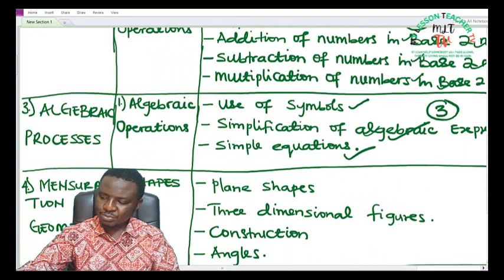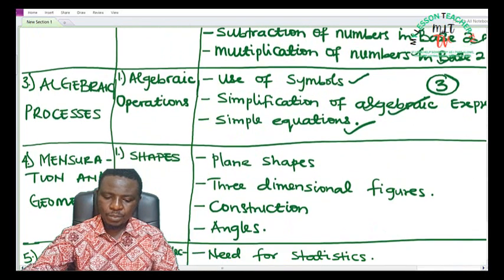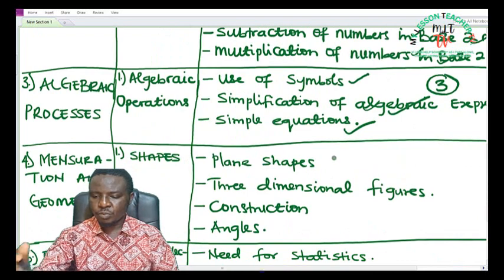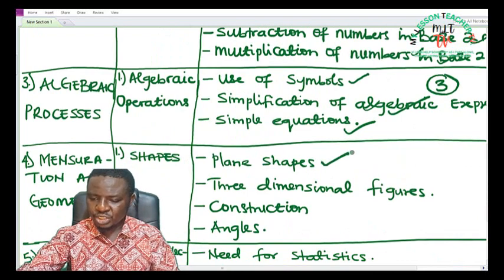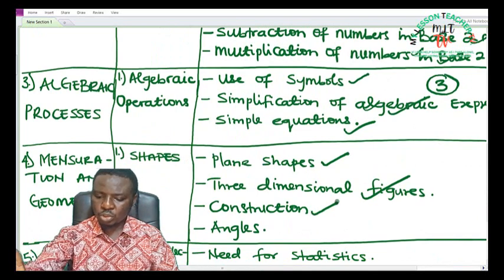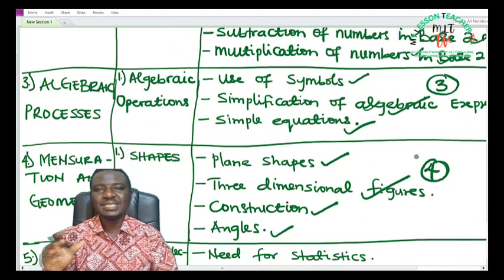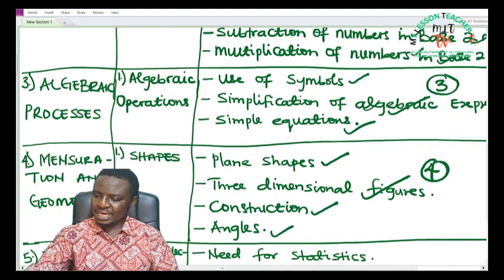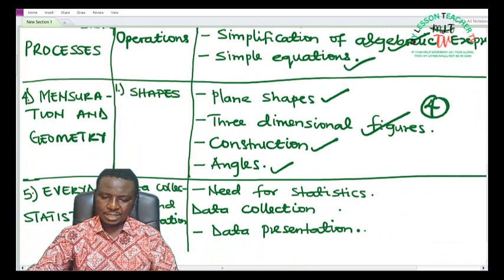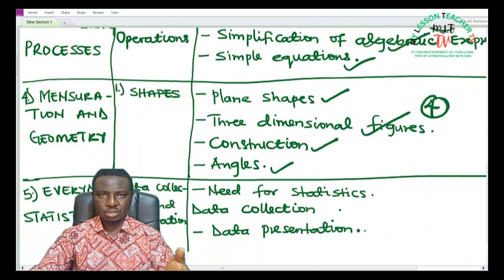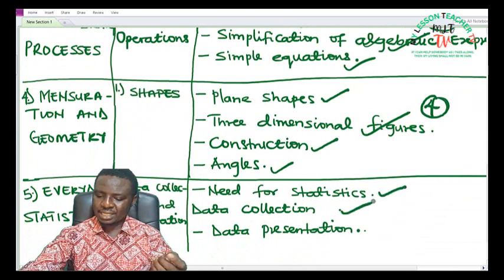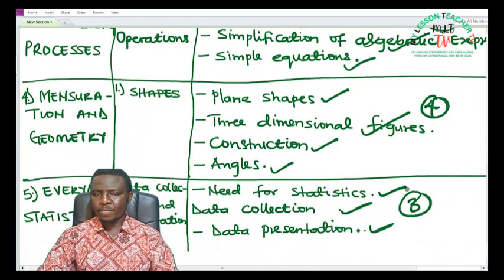Under the fourth theme, which is mensuration and geometry, we have the sub-theme shapes. You shall be looking at plane shapes, three-dimensional figures, and construction and angles — giving you four topics under this theme. Then in everyday statistics, under data collection and presentation, you will be treating topics like the need for statistics, data collection, and data representation — about three topics there.